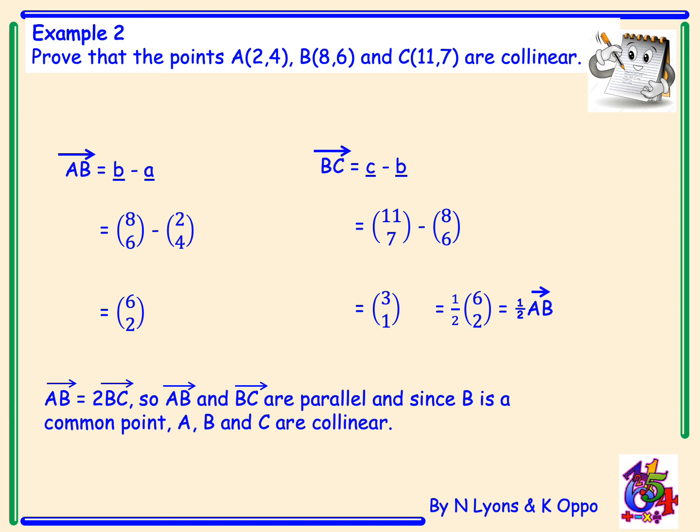So vector AB and vector BC are parallel, and since B is a common point, A, B and C are collinear.